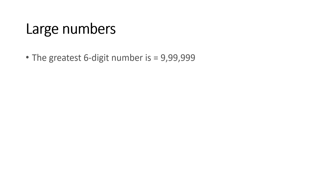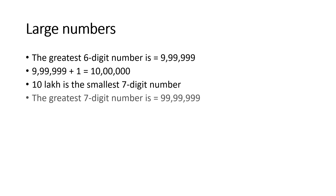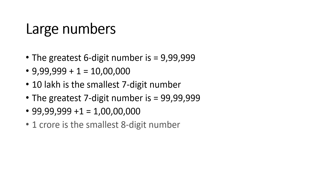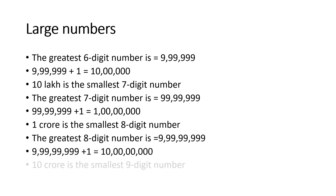The greatest six digit number is 9,99,999. If we add one to this, we get 10 lakh. 10 lakh is the smallest seven digit number. The greatest seven digit number is 99,99,999. If we add one to this, we get 1 crore.